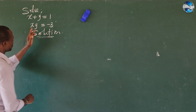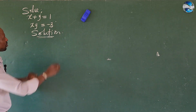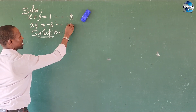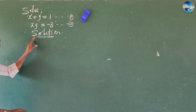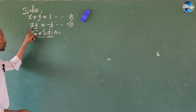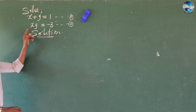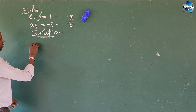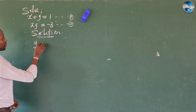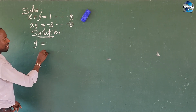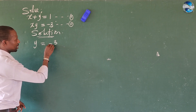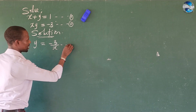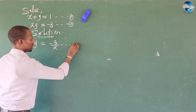So let's take x plus y equals 1 as equation 1, and xy equals minus 3 as equation 2. From equation 2, we want to make y the subject of the formula. So if we make y the subject of the formula, we're going to have y equals minus 3 all over x. Let's call this equation 3.